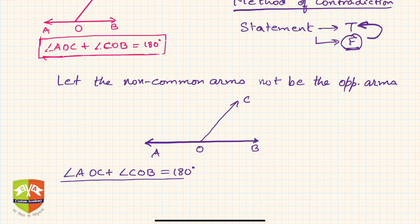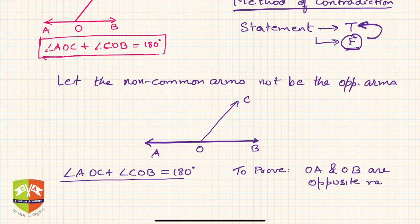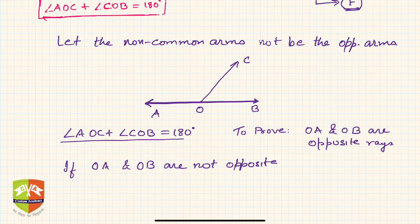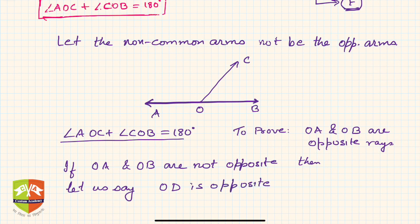We have to prove that OA and OB are opposite rays. We are saying: let them not be opposite. If OA and OB are not opposite, there must be some ray which is opposite to each one of them. So let us say OD is opposite to OA.